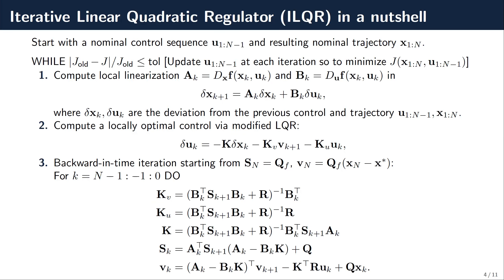Just to briefly review, the iterative linear quadratic regulator is an algorithm that starts with a nominal control sequence U, which includes all the controls — you might have M different controls — over time from 1 to the final time step N minus 1, and then a resulting nominal trajectory from 1 to N. While still within a certain stopping tolerance, you update the nominal control sequence and nominal trajectory at every iteration. The algorithm computes local linearizations — that's where it gets the iterative name — and then uses a modified LQR to update the controls.